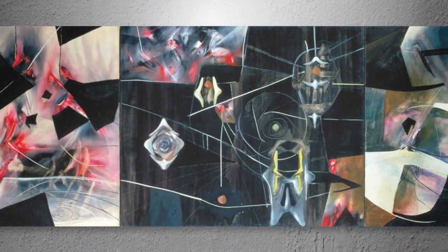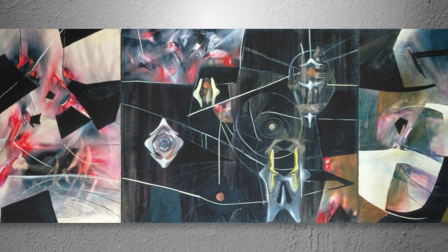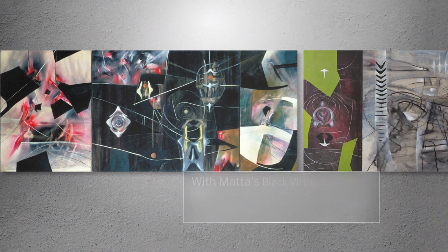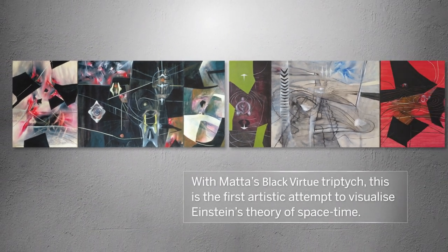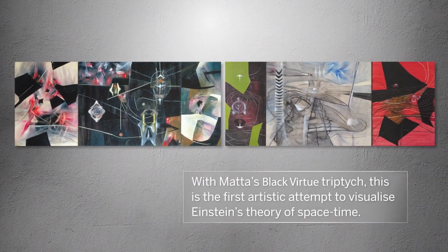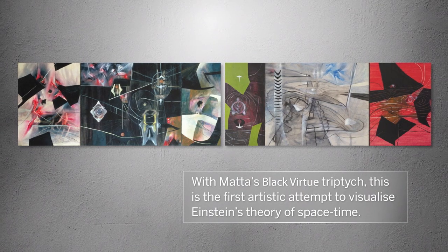Along with Matta's Black Virtue triptych created around the same time, Prince of Blood is considered the first artistic attempt to give a visual form to Einstein's theory of space-time.